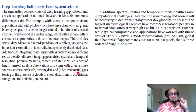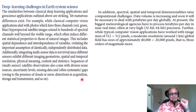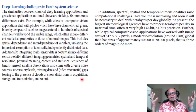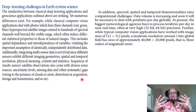Sequences of multi-sensor satellite observations also come with diverse noise sources, uncertainty levels, missing data, and often systematic gaps owing to the presence of clouds and snow, distortion in acquisition, storage, and transmission. Furthermore, the scales of variables themselves differ greatly — temperatures span very large ranges compared to rainfall, and humidity has an exponential dependence on temperature.